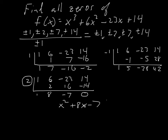We set x²+8x−7=0 and try to solve it. At first you'll try to factor it — you see sevens and eights — but it doesn't work. The signs have to be different so no factor pair adds to 8. If you can't factor it, use the quadratic formula. This does not factor.